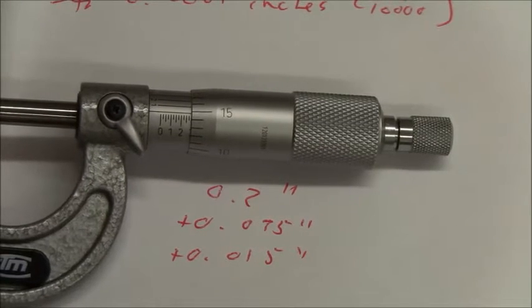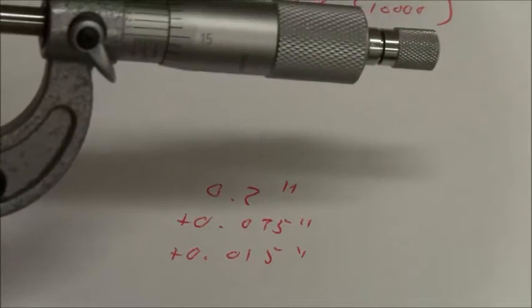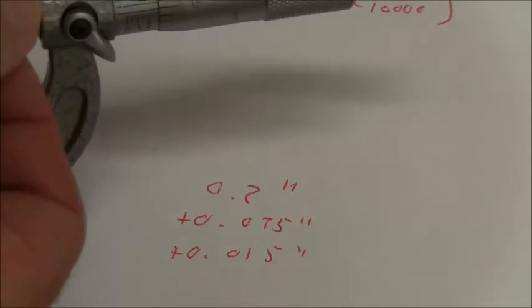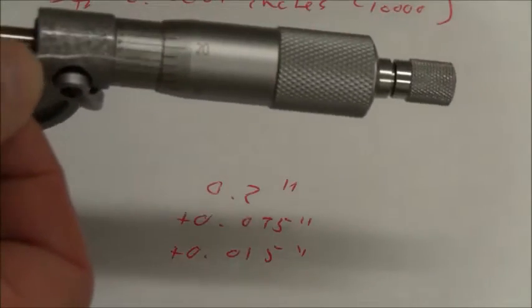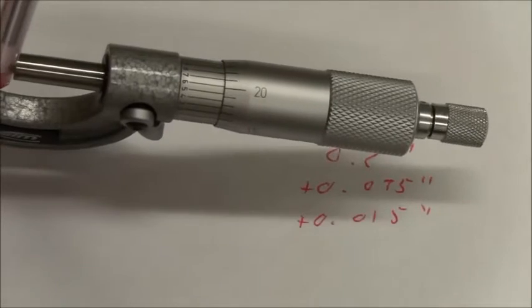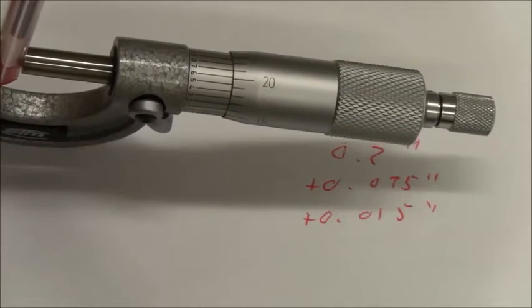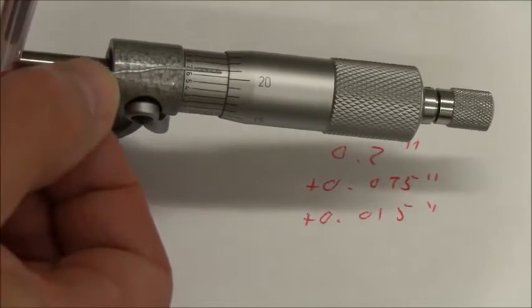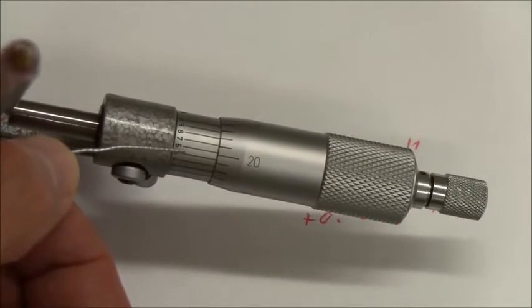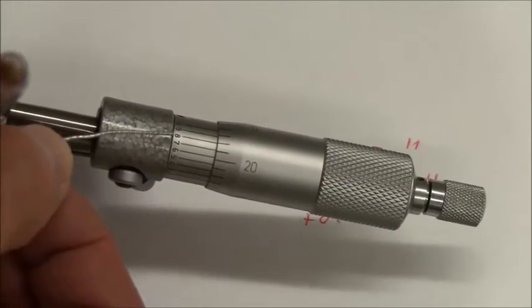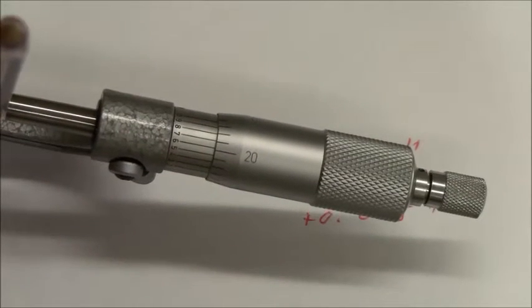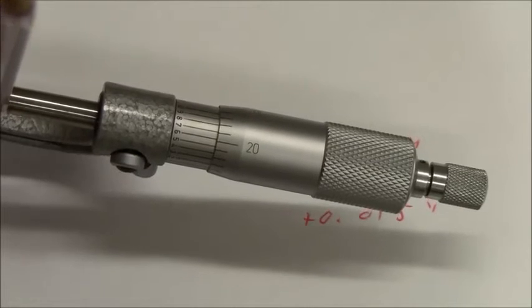And then to get the ten-thousandth, we have to look around the dial till we find a line that hits exactly. From an alignment perspective, I want to make sure that focuses for you. You can see that it's the seven or the eight. I'm gonna say the eight looks better. So that's eight ten-thousandths of an inch. And in my viewfinder, it looks like that's visible, so I'm hoping it's visible for you.